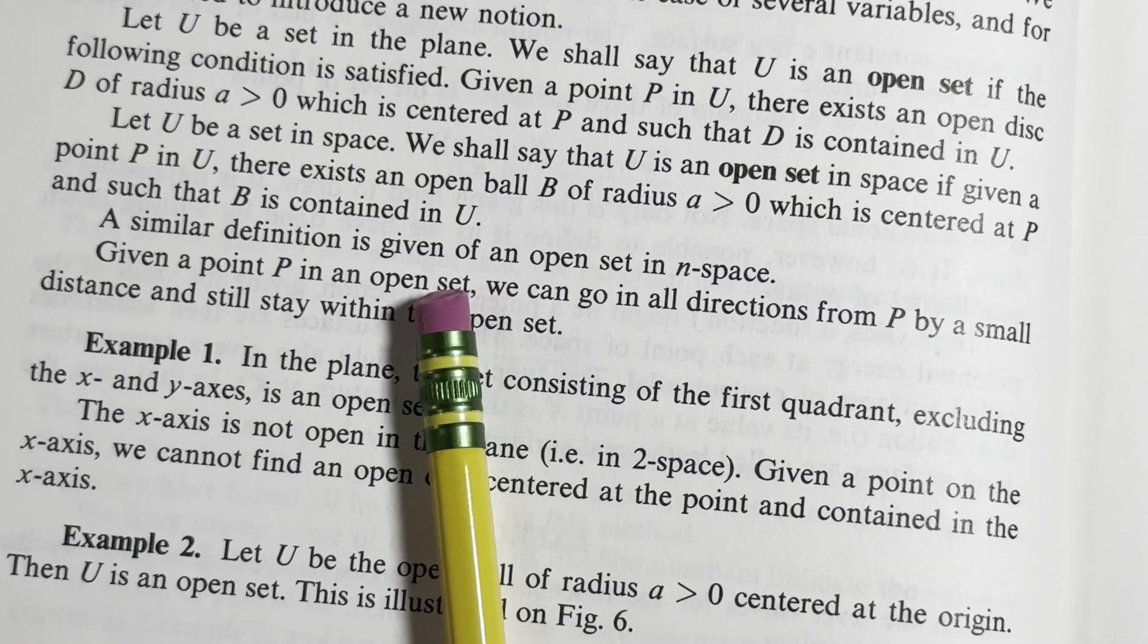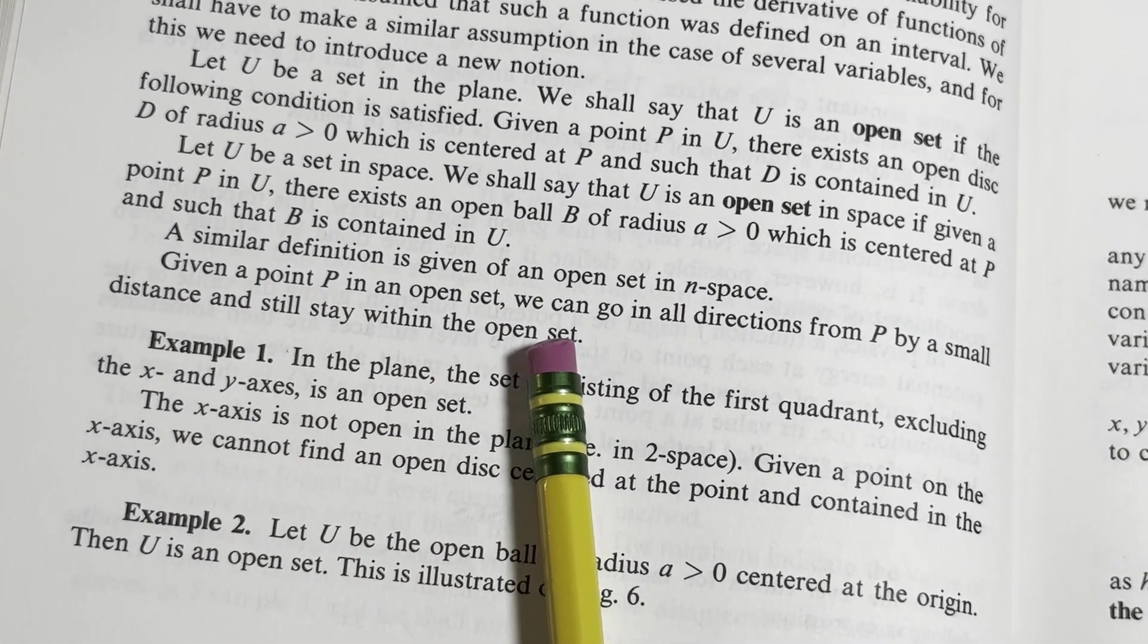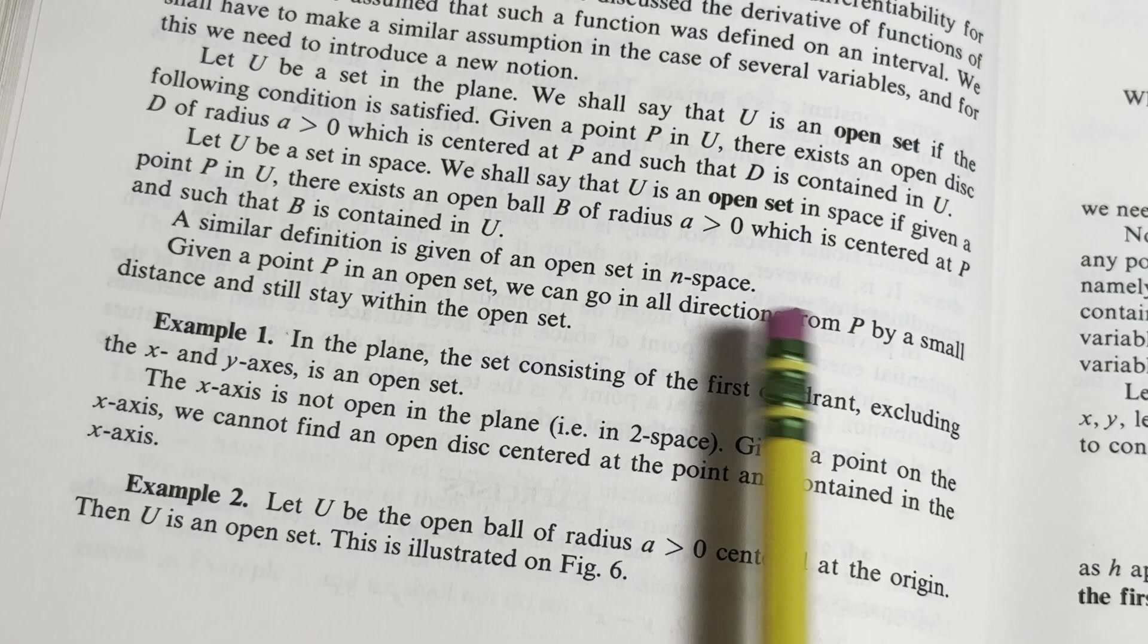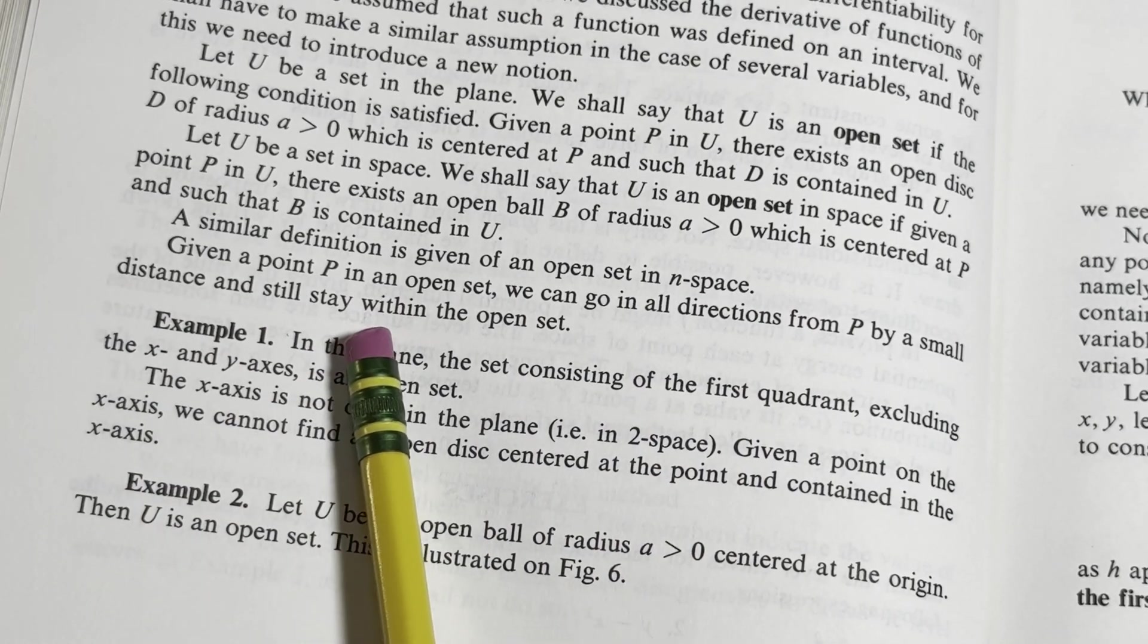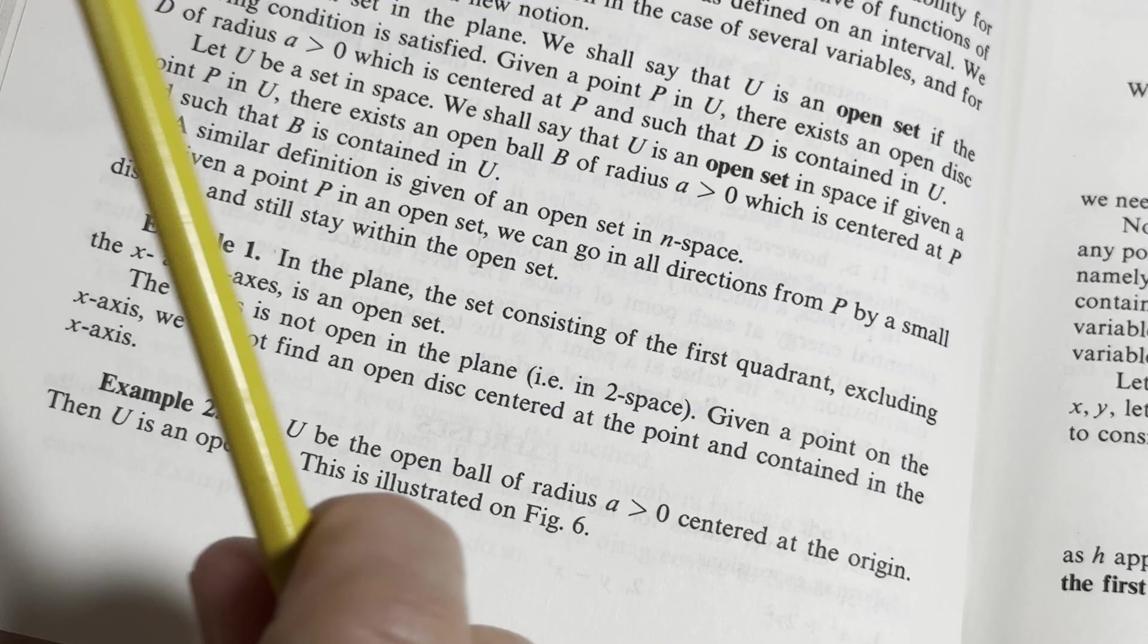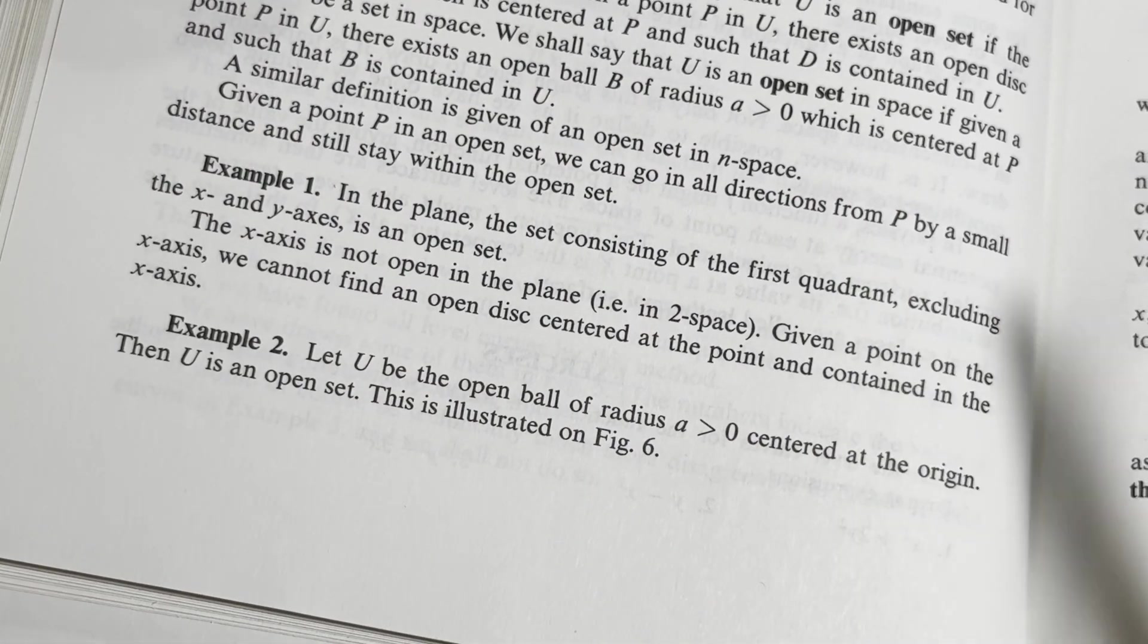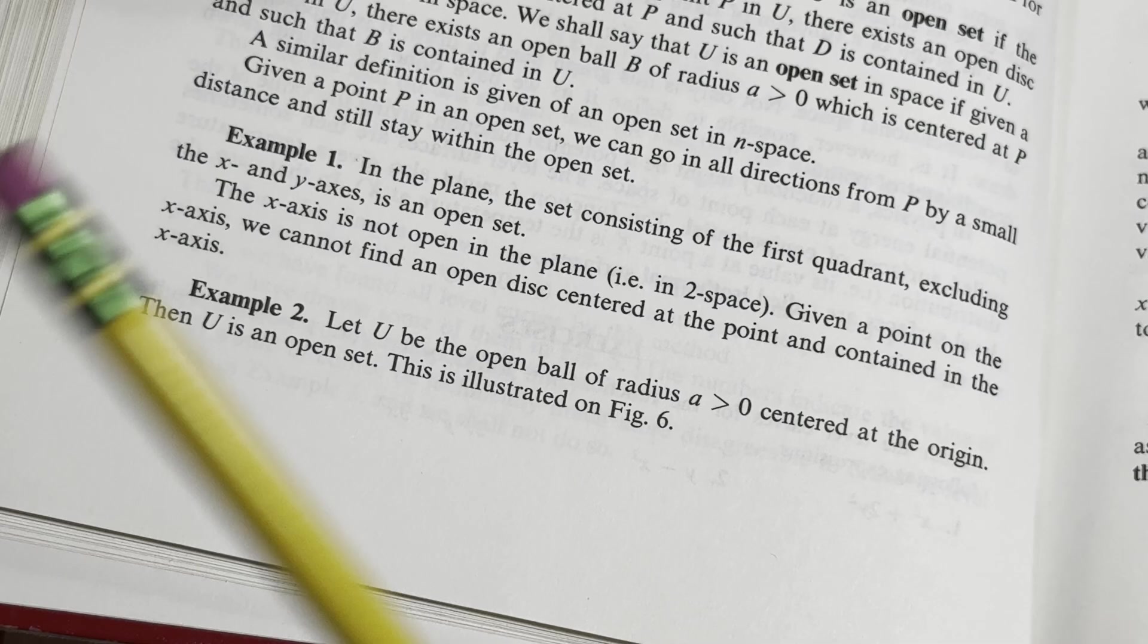A similar definition is given of an open set in N space. Given any point P in an open set, we can go in all directions from P by a small distance and still stay within the open set. You can move an infinitely small amount from that point and you're going to be good. There's a small enough amount you can move, some epsilon.